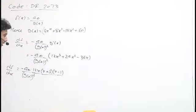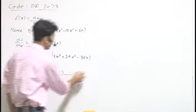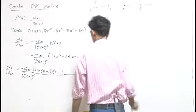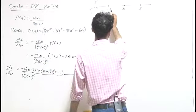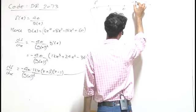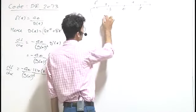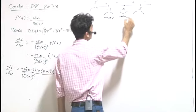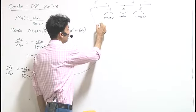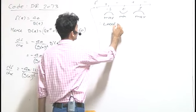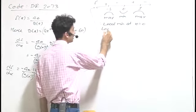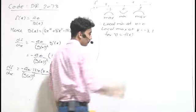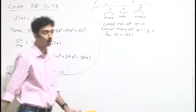Setting df/dx = 0 and checking the sign of f'(x), we get a number line with critical points at x = -3, 0, and 1. The sign scheme for f'(x) is: minus, plus, minus, plus. At x = -3 and x = 1 we have local maxima, and at x = 0 we have a local minima.